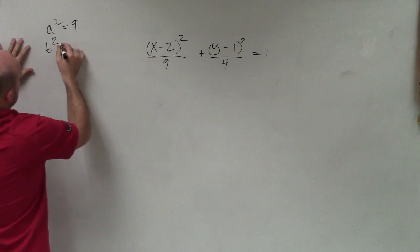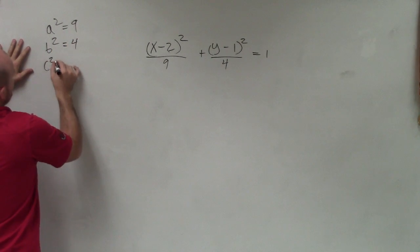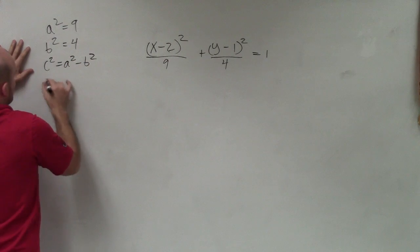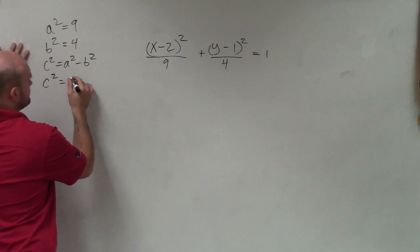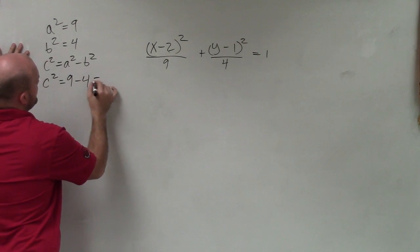Therefore, b² is going to be the smaller, which is 4. And c² equals a² minus b², so c² equals 9 minus 4, which equals 5.